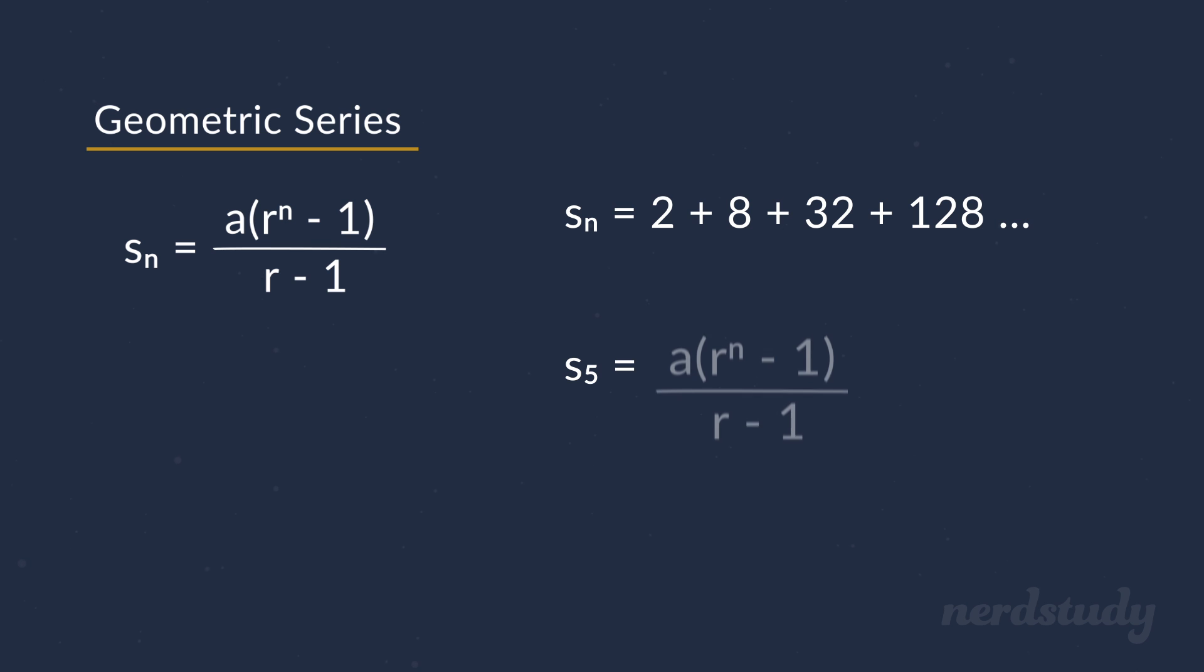Well, firstly, what we need to do here is determine two things in order to solve for this. We need to determine what the first term is, as well as what the common ratio between each term is, in order to fill in the missing variables. So here we see that the first term is 2, and that the common ratio between each term is 4, since every term is a multiplication of 4 with the previous term. Great!